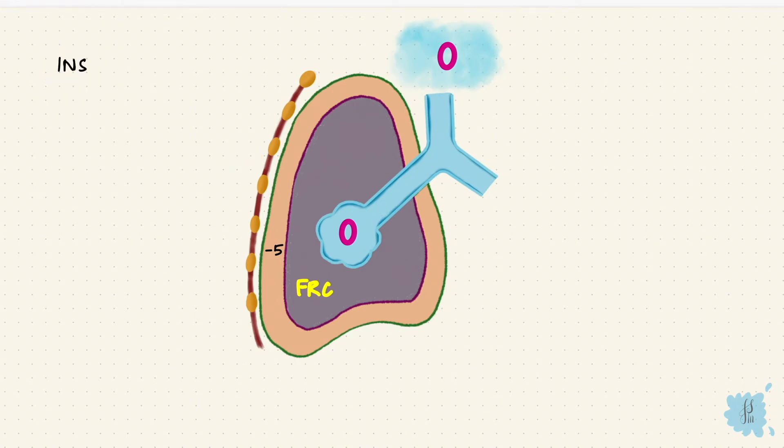Now when inspiration begins, the diaphragm is going to contract. The lungs expand, and so the alveolar pressure becomes slightly negative. It's going to go down to minus 1 cm of water. So now there's a gradient between the atmosphere and the alveoli, and the alveolar pressure is lower than the atmosphere. So the air is going to enter the lungs.